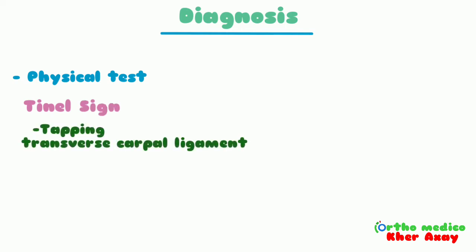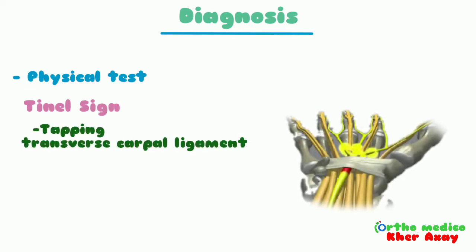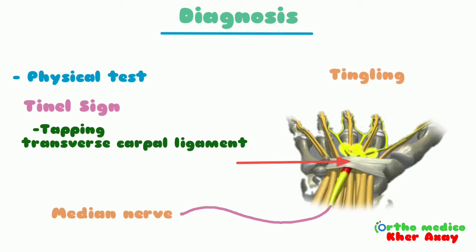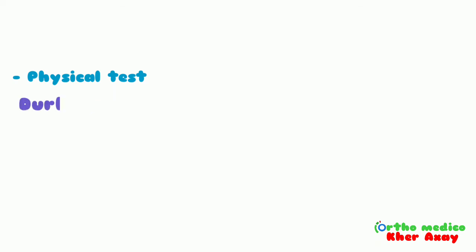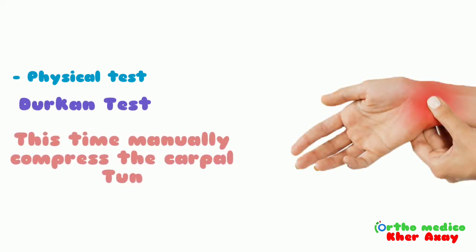Another test is the Tinel sign, performed by tapping over the transverse carpal ligament. The Durkan test involves manually compressing the carpal tunnel for 30 seconds.